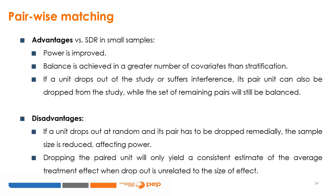Pairwise matching introduces several advantages over a single random draw in small samples. Most importantly, it improves power — for a given level of power, smaller sample sizes are required. Balance is achieved in a greater number of covariates than with stratification. If a unit drops out of the study, its pair unit can also be dropped and the remaining pairs will still be balanced. However, if a unit drops out at random and its pair must be dropped remedially, the sample size is reduced, affecting power — which does not happen in simple randomization.